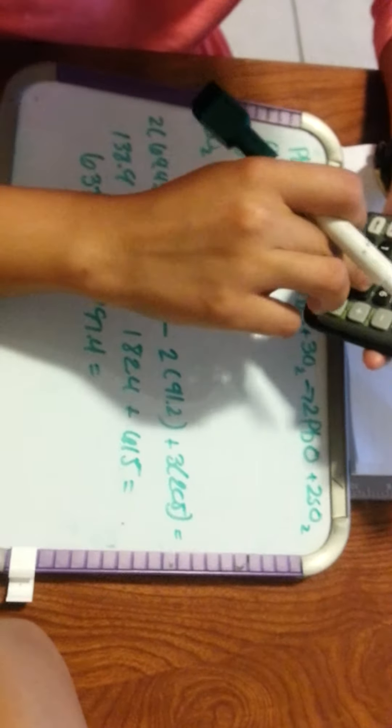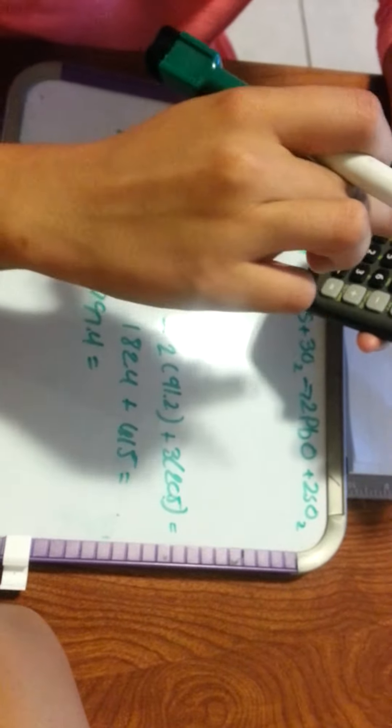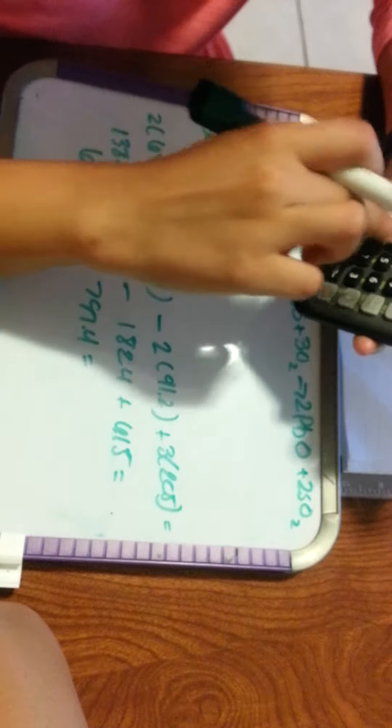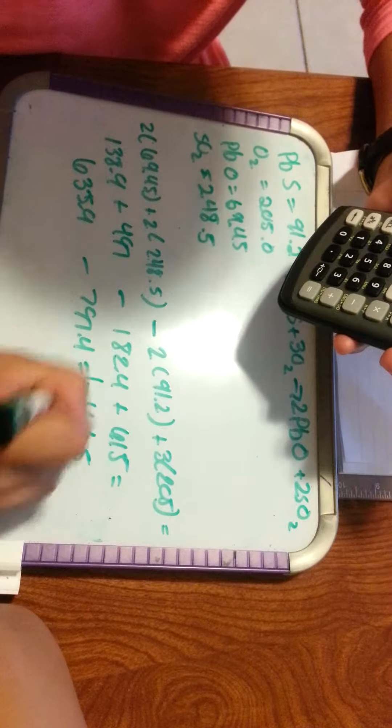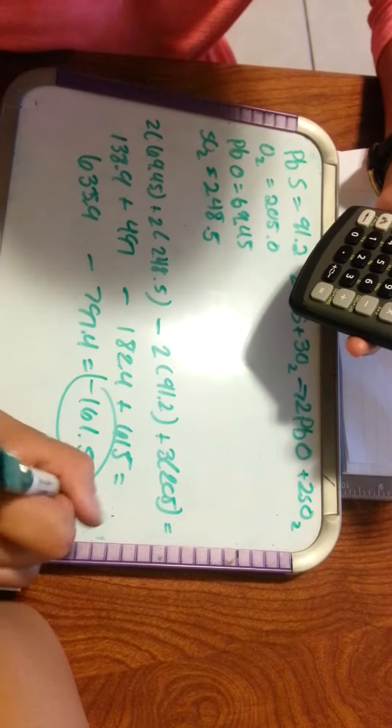635.9 minus 797.4, this is negative 1601.5, which is answer B.